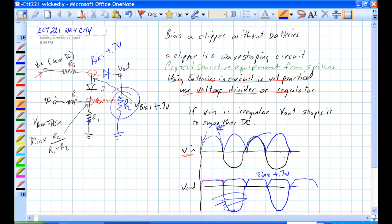Very interesting circuit. They noted in the book, if V in is irregular, the voltage output shapes it to a smoother DC. So we can actually regulate the amount of voltage using a circuit similar to this.